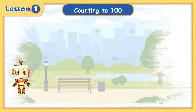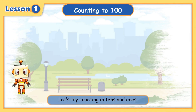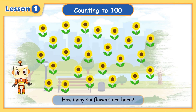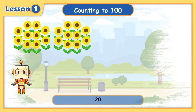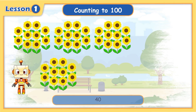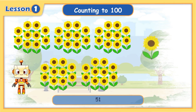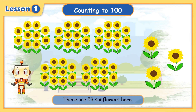Good job! This is how we count in 10s. Let's try counting in 10s and 1s. How many sunflowers are here? 10, 20, 30, 40, 50, 51, 52, 53. There are 53 sunflowers here.